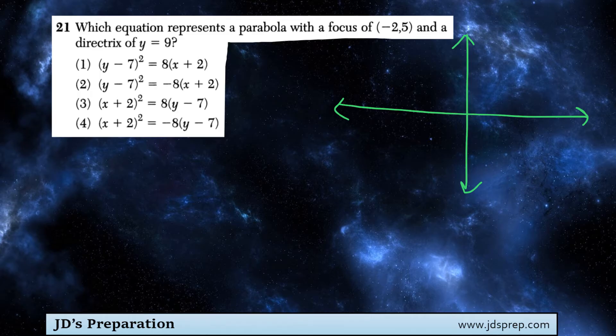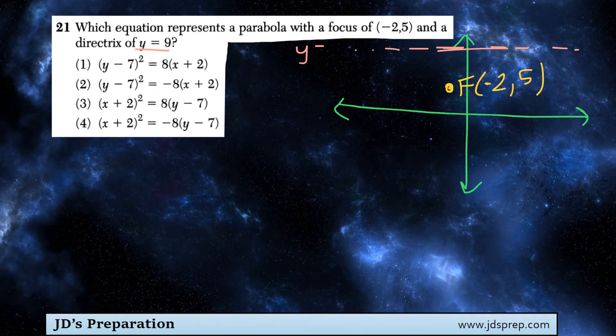So let's go ahead and plot the focus. Negative 2 and 5 would be somewhere around here. So that's our focus, (-2, 5). And our directrix is the line y equals 9. So that would be somewhere up here. That's y equals 9.